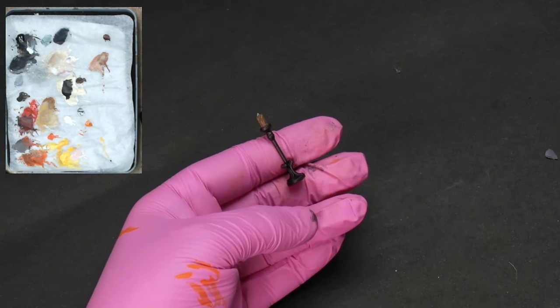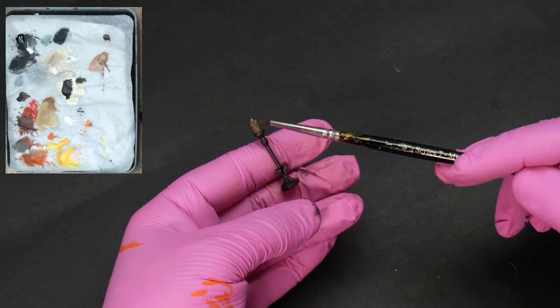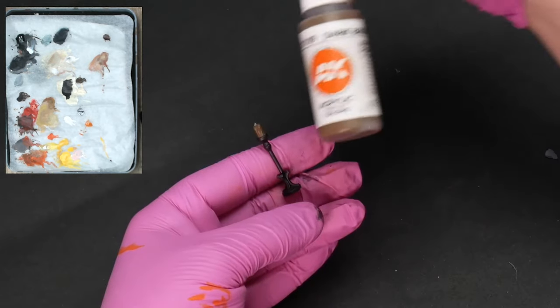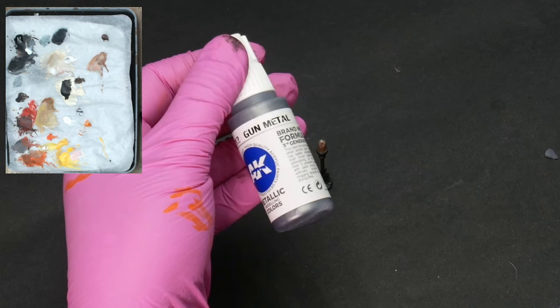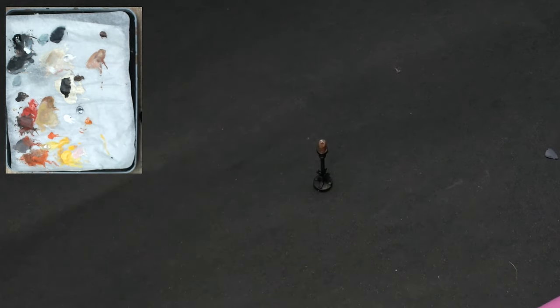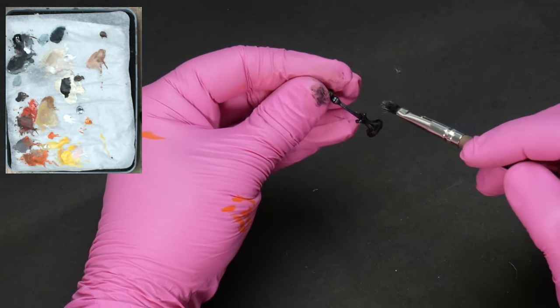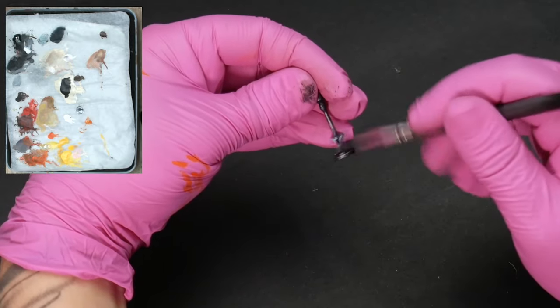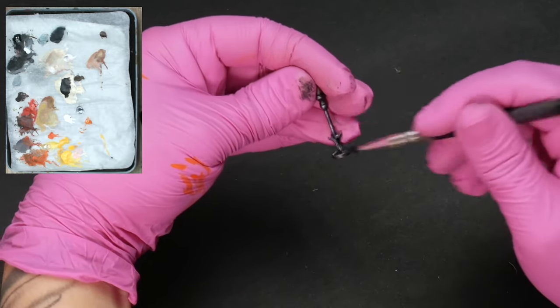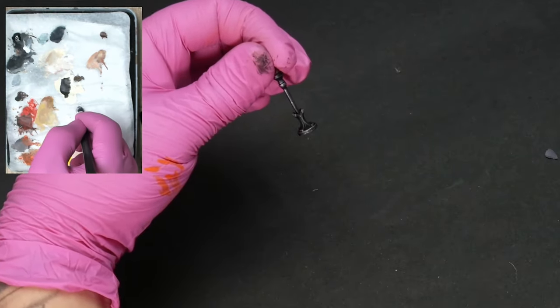For the candlestick, I applied black on the metal part and dark brown on the candles. Now, the gunmetal, metallic acrylic paint. I removed the excess paint, not as much as it would be for a dry brush, but something close. That way, when I pass the brush, it leaves more paint on the reliefs and gives it a more aged look.